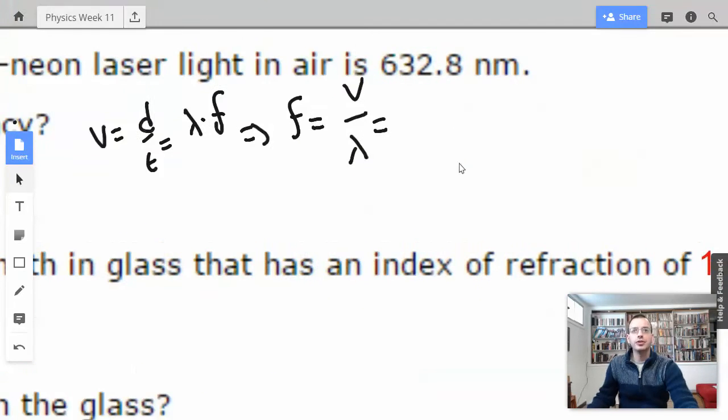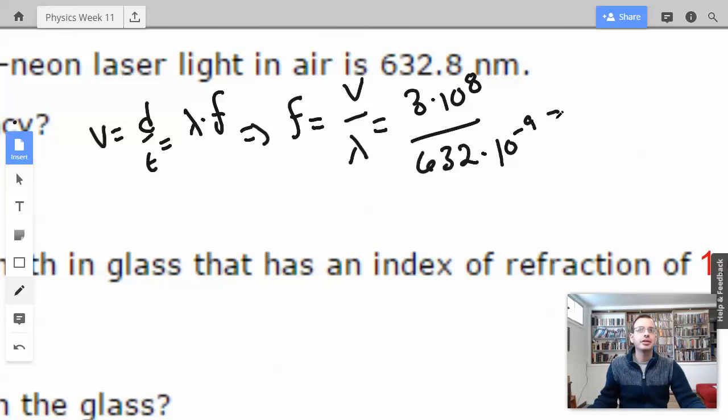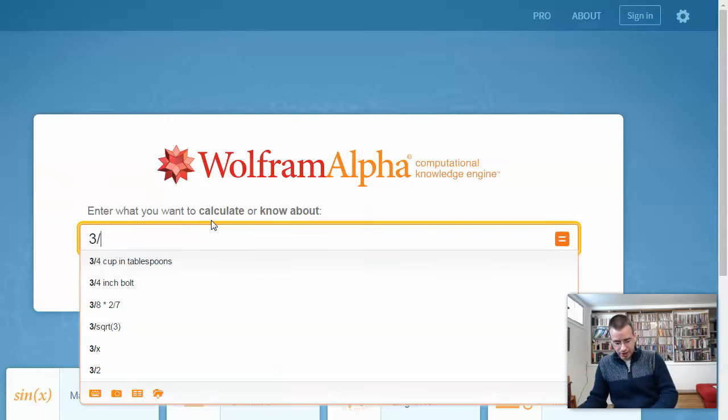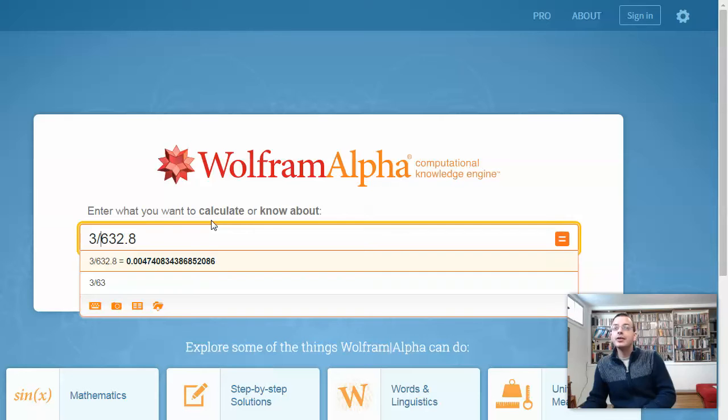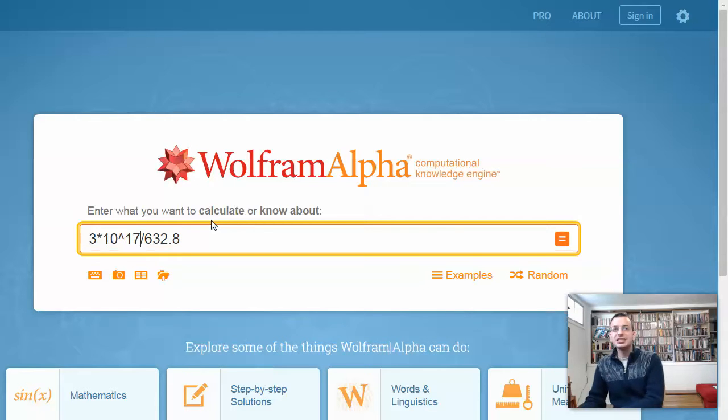Since we know the wavelength, we can figure this out. So we have 3 times 10 to the 8th over 632 times 10 to the negative 9th, which is going to give us... I'm going to do 3 over 632.8 times 10, 8 plus 9 is 17, because 10 to the negative 9th on the bottom is the same as 10 to the 9th on the top.